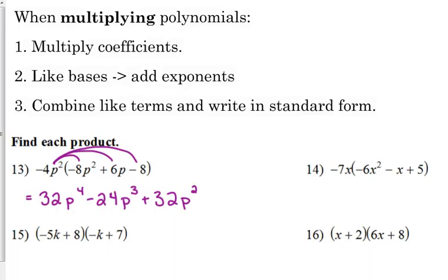Usually the thing that throws people off the most is when you're having to distribute a negative coefficient. Things can get a little hairy, but you'll make it through. Let's look at number 14. Distributing a negative 7x, so negative 7 times negative 6 is positive 42, x times x² is x³. Negative 7x times negative x is positive 7x², and negative 7x times positive 5 would be negative 35x.